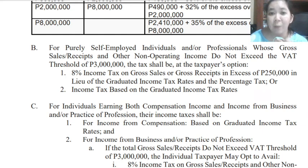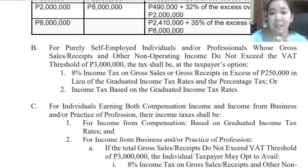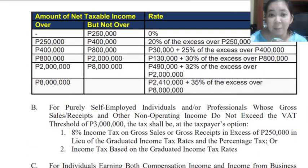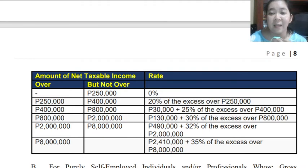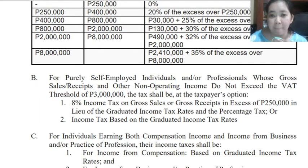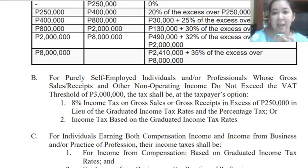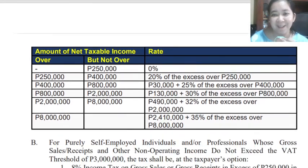Letter B: for purely self-employed individuals or professionals whose gross sales or receipts and other non-operating income do not exceed the VAT threshold of 3 million, the tax shall be at their option. Option one: they can use 8% income tax on their gross sales or gross receipts in excess of 250,000 in lieu of the graduated tax table. Option two: they can also use the graduated tax table. So they have the option.